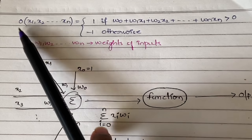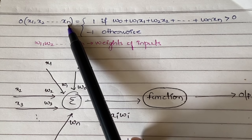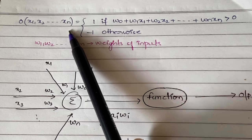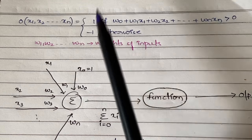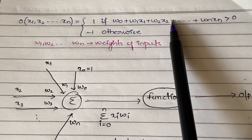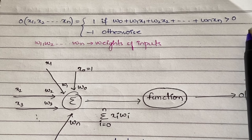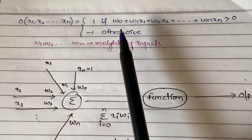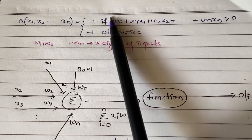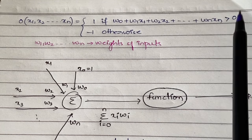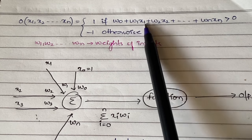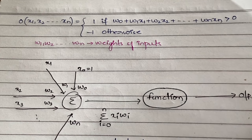The output function is written as: o(x1, x2, ..., xn) equals one when w0 + w1*x1 + w2*x2 + ... + wn*xn is greater than zero, and negative one otherwise. This expression — w0 + w1*x1 and so on — is the linear combination of the inputs. Here w0 is the initial weight, and w1*x1, w2*x2 are the inputs and their corresponding weights.